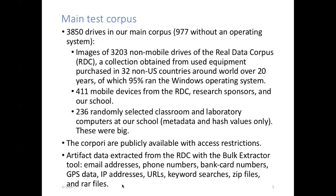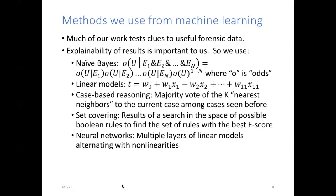There are more difficult restrictions with privacy if you work on data from US citizens, so we emphasized collecting from all over the world. In addition to all the files, we also obtained artifact data: email addresses, phone numbers, bank card numbers, personal names, keyword searches, and URLs visited. We're going to use basic machine learning — I'm not a big fan of fancy methods like neural networks. I want techniques that are easy to explain and justify. So we've done a lot with naive Bayes reasoning and linear models where we add up a bunch of factors to decide things.